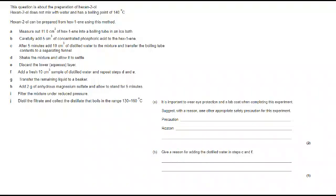In part A, it's important to wear eye protection and a lab coat when completing this experiment. Suggest with a reason one other appropriate safety precaution for this experiment. Now obviously, if you've read the question properly, you're not going to fall into the first pitfall and talk about wearing goggles. You must read these questions carefully. So the precaution might well be wearing gloves. And the reason for that, if you go through and think about the best reason to protect yourself or the most likely thing you're going to have to protect yourself from, is the concentrated phosphoric acid. What's wrong with it? It's corrosive.